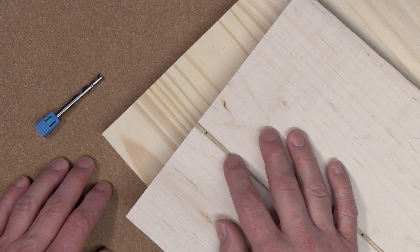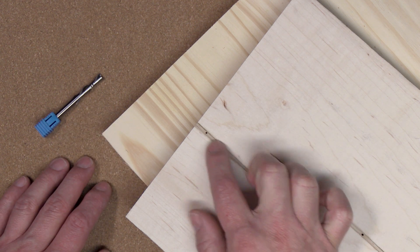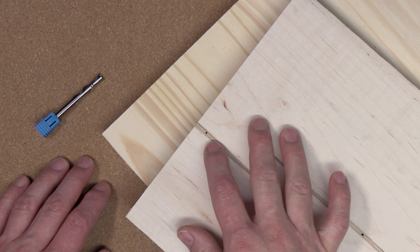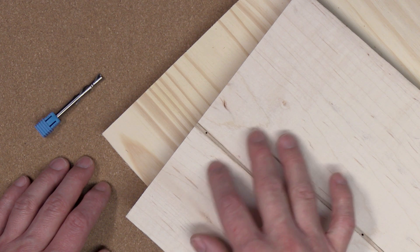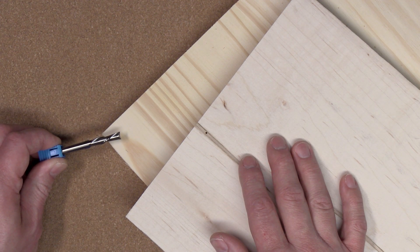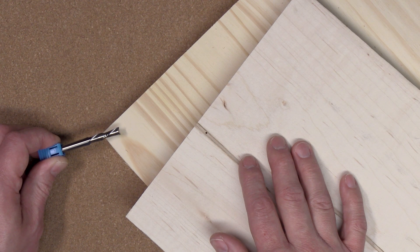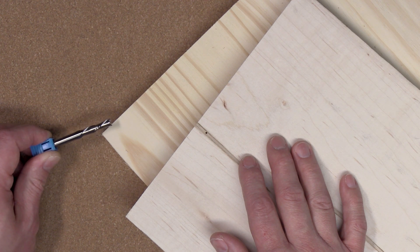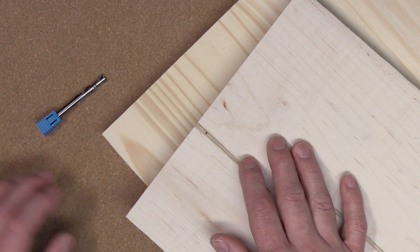I'll also be using this one inch wormy maple. This is just maple that has been attacked by bugs which kind of gives it this spalting effect in it. Now to cut my project out I'll be using this dual flute down cut quarter inch bit. This particular bit I'm using is from Freud. It's a fairly affordable bit and gives you a clean cut.